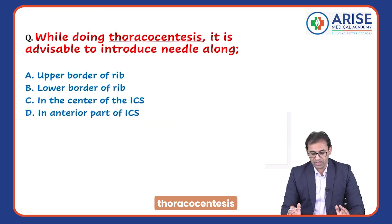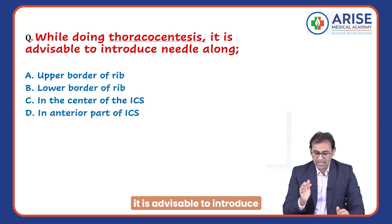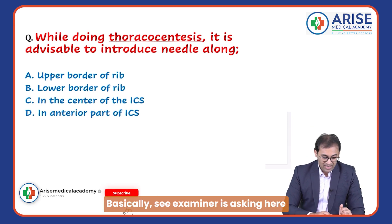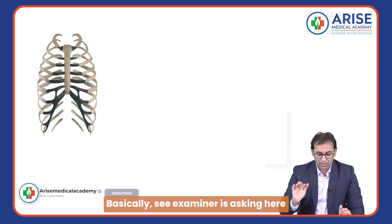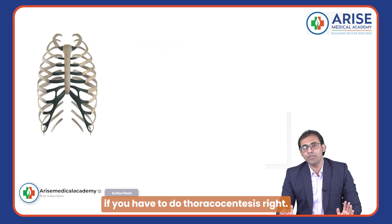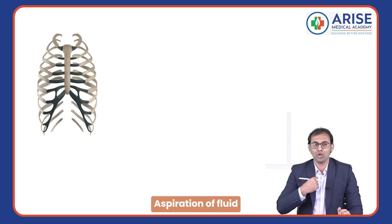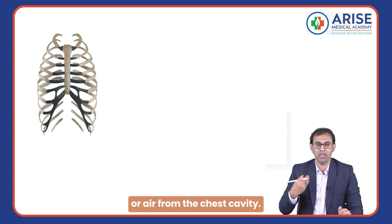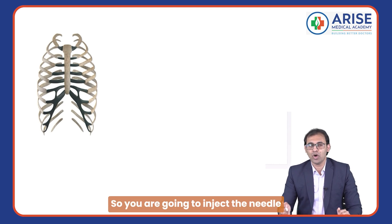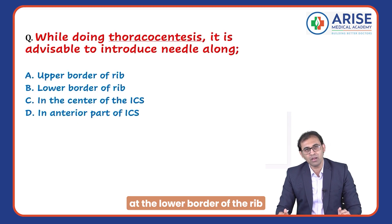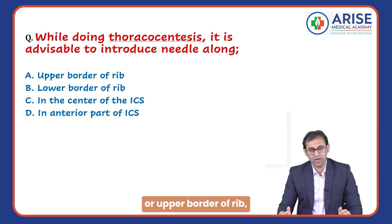While doing thoracocentesis, the examiner is asking: if you have to do thoracocentesis — aspiration of fluid or air from the chest cavity — are you going to insert the needle at the lower border of the rib, the upper border of the rib, or in the center of the intercostal space?